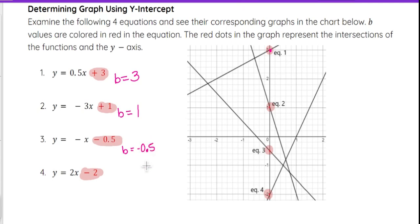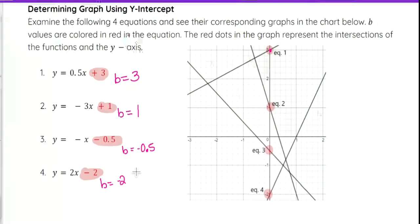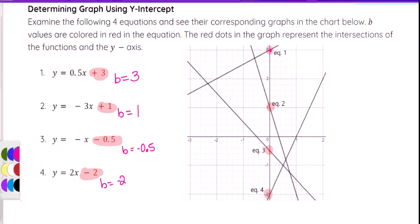That is where equation 3 crosses the y-axis. And then b equals negative 2, that's where equation 4 crosses the y-axis. So that b tells us exactly where the graph crosses the y-axis.